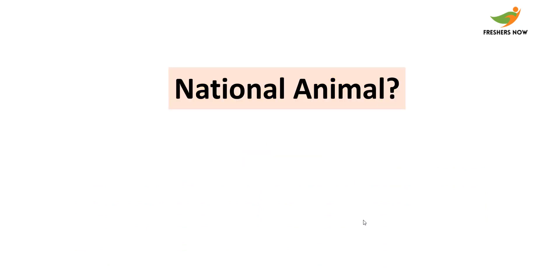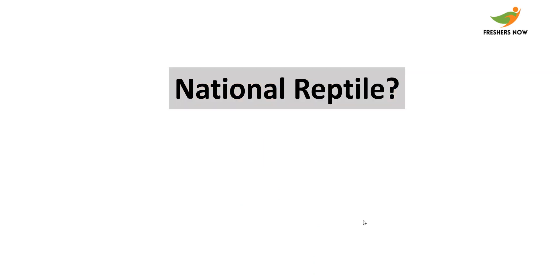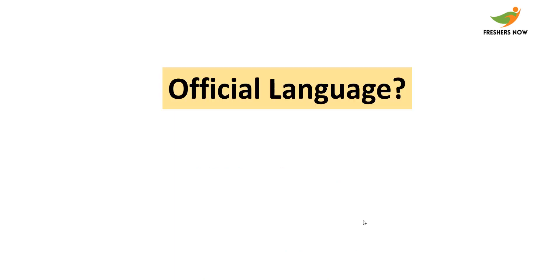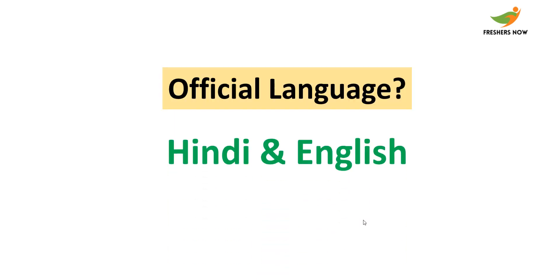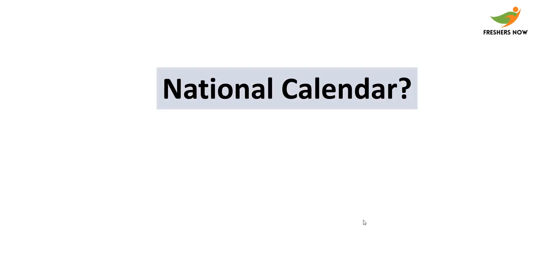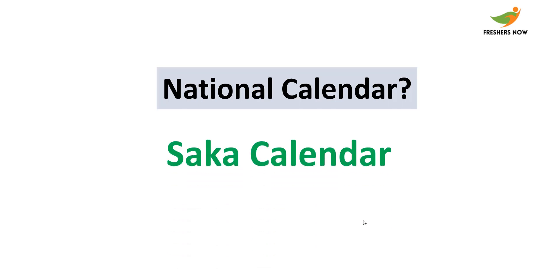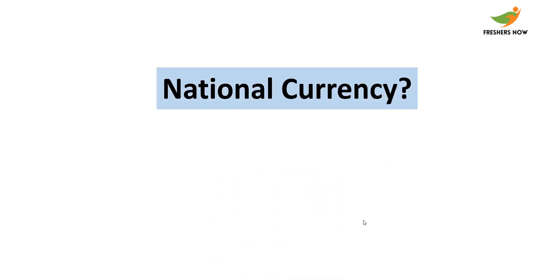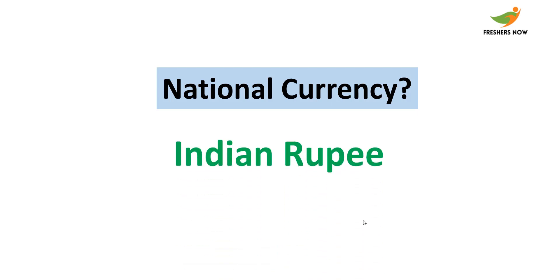National animal — the answer is tiger. National reptile — the answer is king cobra. Official language — Hindi and English. National calendar — the answer is the Saka calendar. National airline — Air India. National currency — Indian rupee.